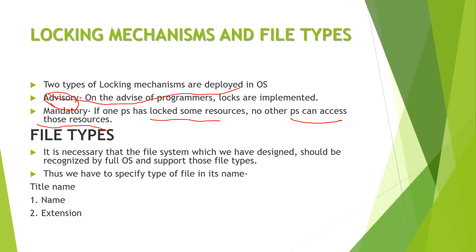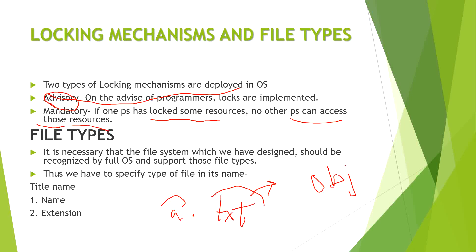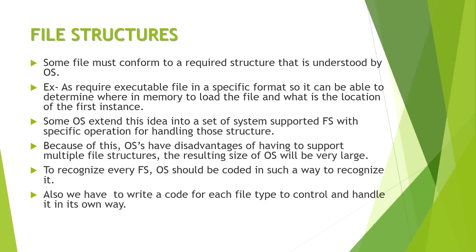That covers the basics of the file system. Before the next video on file structures, there is one more topic: file types. Different file types are identified by their extensions — for example, a file named 'a.txt' has name 'a' and extension 'txt'. Changing the extension changes the file type, and changing the name makes it a different file. In the next video we will discuss file structure — thank you.